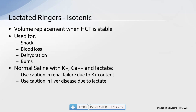Lactated Ringer's is isotonic and also used for volume replacement when the hematocrit is stable — for shock, blood loss, dehydration, and burns. Essentially, lactated Ringer's is like normal saline but also includes potassium, calcium, and lactate. Use caution in renal failure because of the potassium content, and use caution in liver disease because of the lactate.